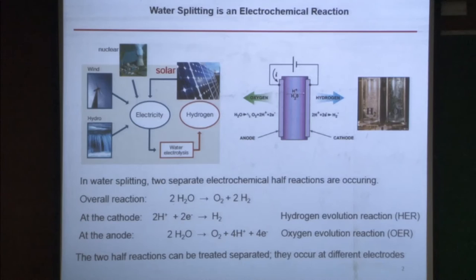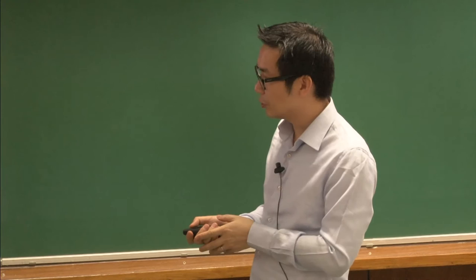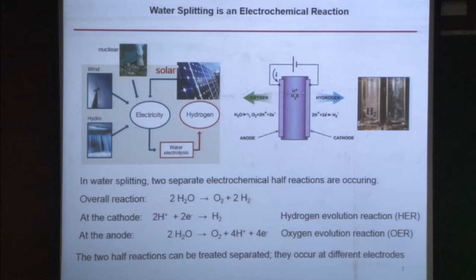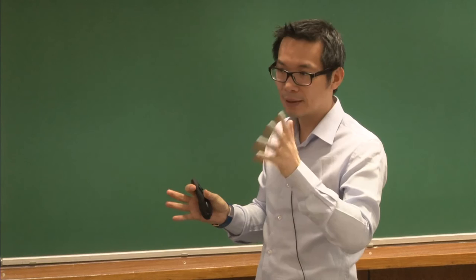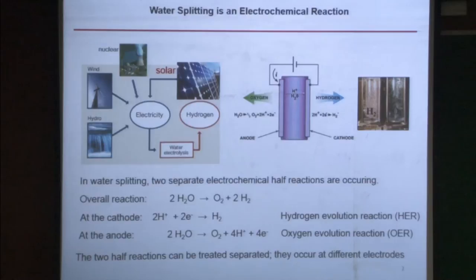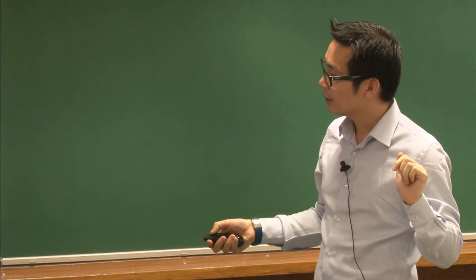These two half-reactions can be separated — they happen at different places. You use a medium to transfer protons and electrons. In a chemistry demonstration, you can do water splitting by electrolysis and get hydrogen and oxygen from two different compartments. In one compartment, hydrogen is made — the hydrogen evolution reaction — which we call the cathode in electrochemistry. The other is the anode. In electrolysis, the cathode is reduction and the anode is oxidation. We use one chapter each for these two reactions.